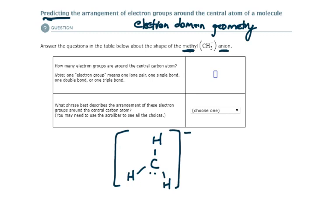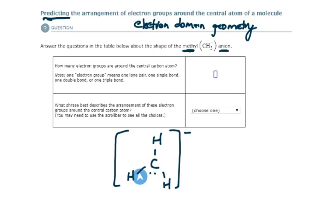The next step: we have a Lewis structure, and the first question asks how many electron groups are around the central carbon atom. Note: one electron group means one lone pair, one single bond, double bond, or triple bond. So all I need to do is count electron groups around this central carbon atom. Even though this is a pair of atoms, it counts as one electron group. And even if it were a double bond or a triple bond, that would still be only one electron group.